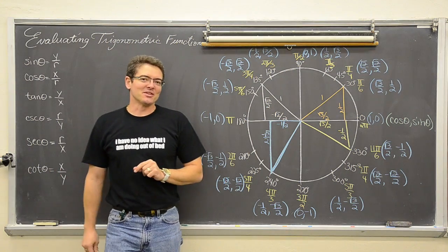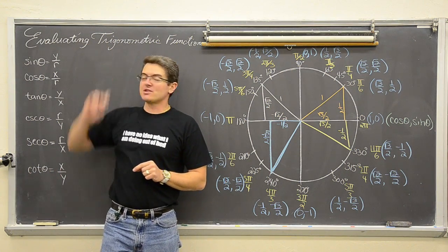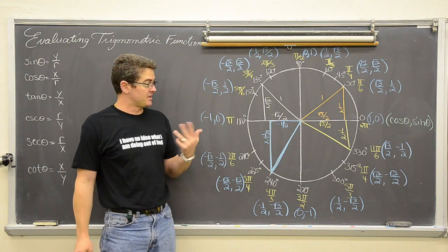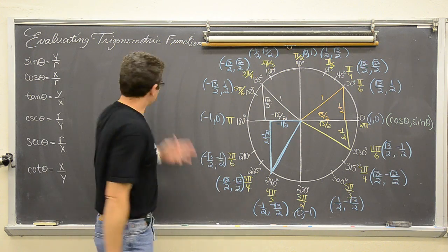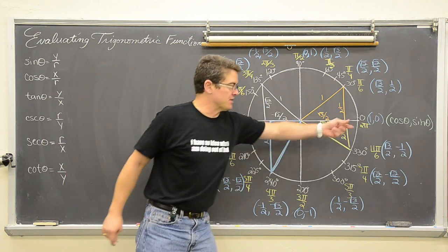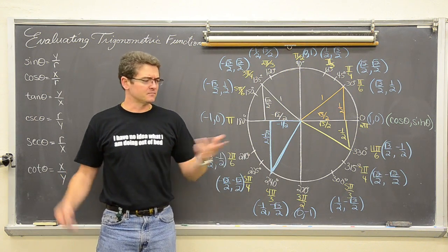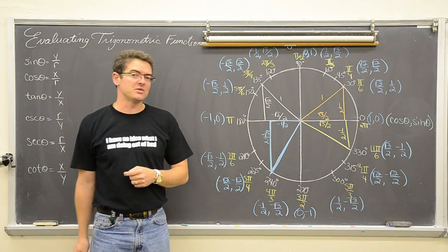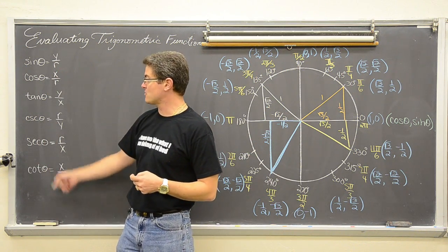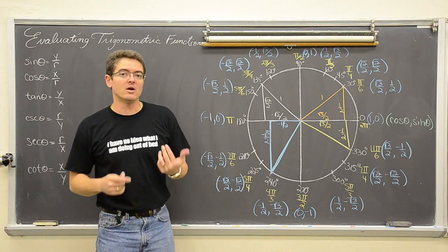Let's revisit that unit circle and start evaluating some trig functions. There are 6 trig functions and 16 angles, and we'll use these in cooperation to answer some questions, setting up trig values and keeping them in exact form.